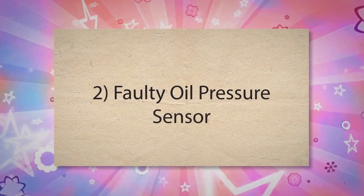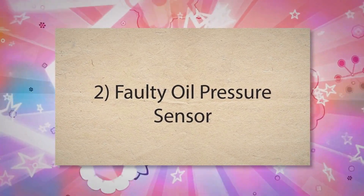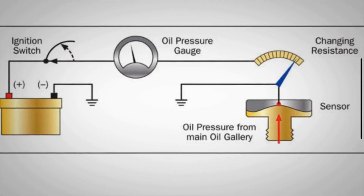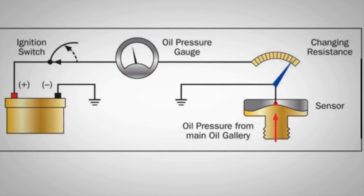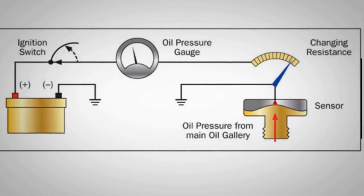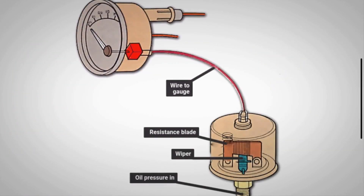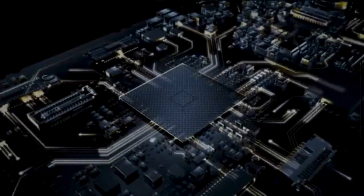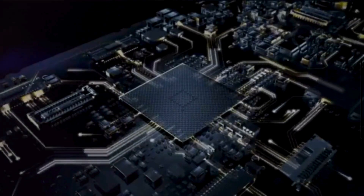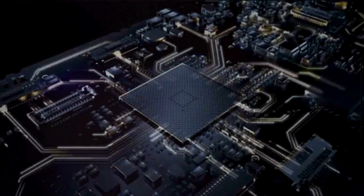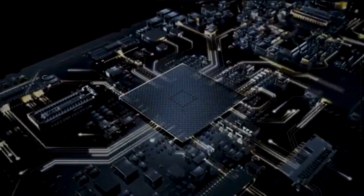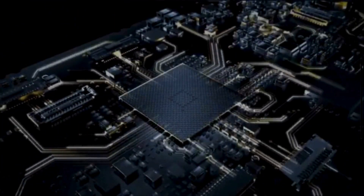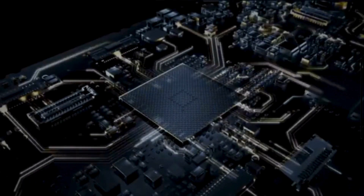2. Faulty oil pressure sensor: The oil pressure sensor or switch monitors the engine's oil pressure and sends this information to the powertrain control module. If the sensor or switch is malfunctioning, it may send incorrect low voltage signals to the PCM. When the PCM receives low voltage signals from the oil pressure sensor, it triggers the PO522 code.